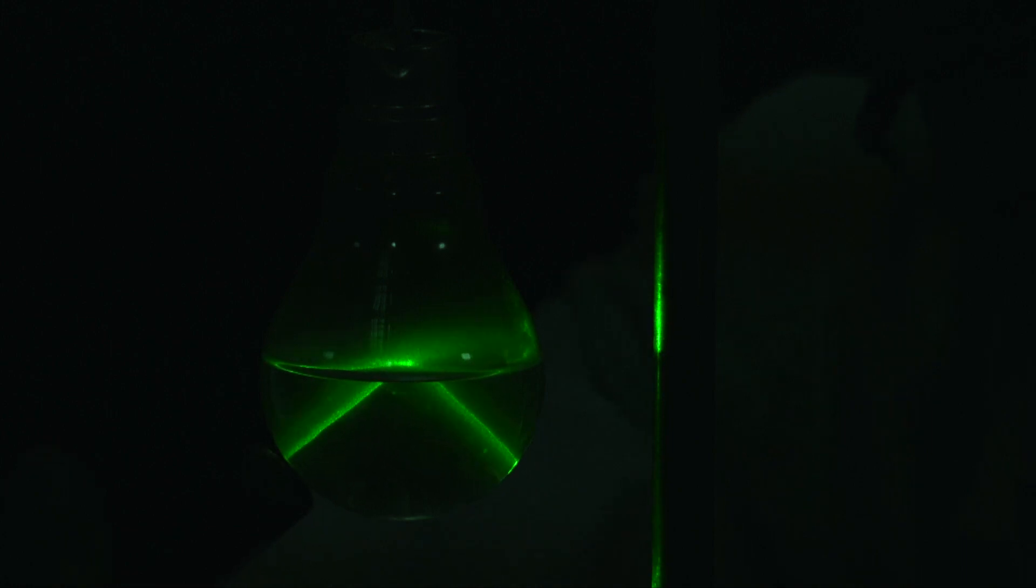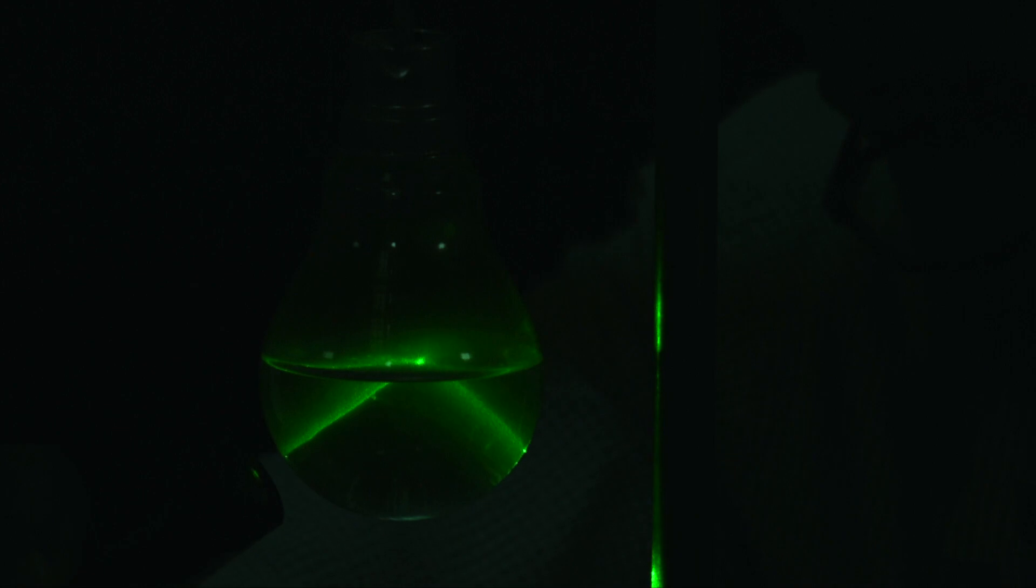When the angle of reflection just exceeds 90 degrees, the angle of refraction exceeds 90 degrees, then it is totally reflected in the first medium. So this is total internal reflection.